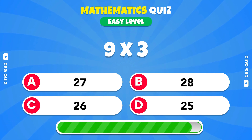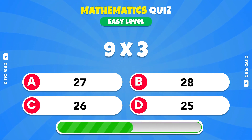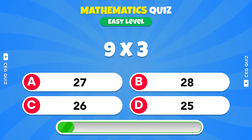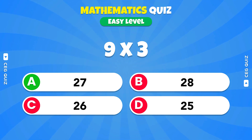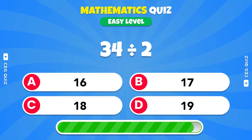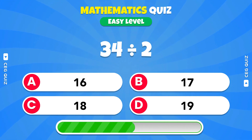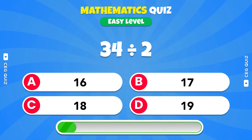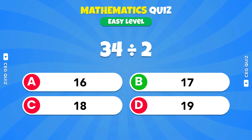Multiply 9 times 3. You got it, it's 27. What is 34 divided by 2? Option B, 17.